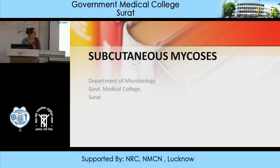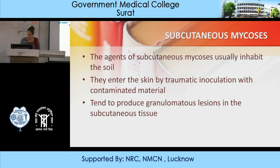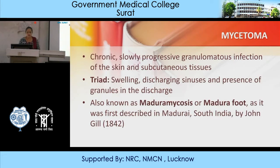Today we will discuss subcutaneous mycosis. These agents are responsible for subcutaneous mycosis and are usually inhabitants of the soil. They enter the skin by traumatic inoculation from contaminated material and tend to produce granulomatous lesions in the subcutaneous tissue. There is always some history of trauma, injury, or contact with soil. They are generally chronic, slowly progressive granulomatous infections of the skin and subcutaneous tissue.